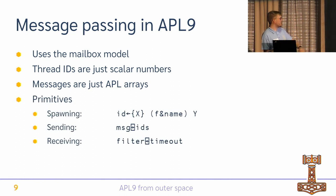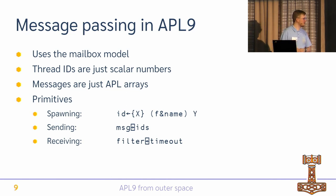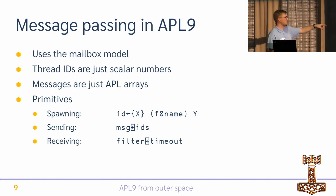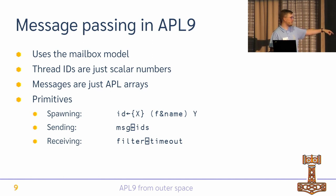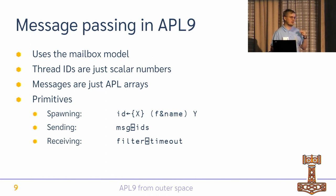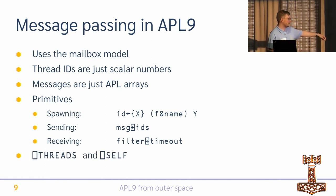I've added three basic primitives. Spawning is similar to Dialog's except I made it a dyadic operator so I can give it a name — purely for debugging. Sending is the box with the right arrow inside: it takes a message and sends it to an array of thread IDs, sending to every one of them. Receiving is a monadic operator that takes an operand function used to select which message in the mailbox to pick — going through them one by one in order, filtering in. You can give it a timeout if you don't want to wait forever. I also have two system functions: quad-self to get the thread ID, and quad-threads to get information about currently running threads.